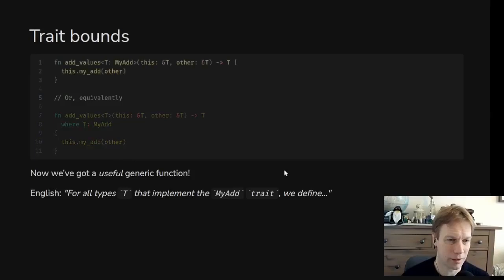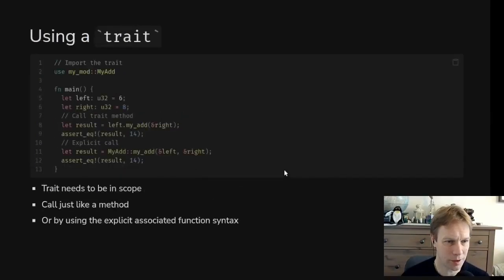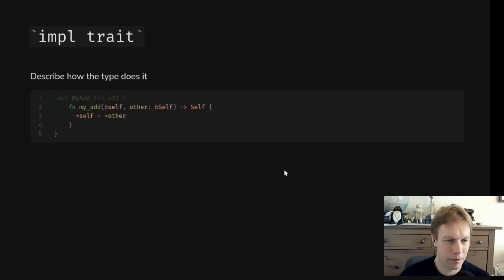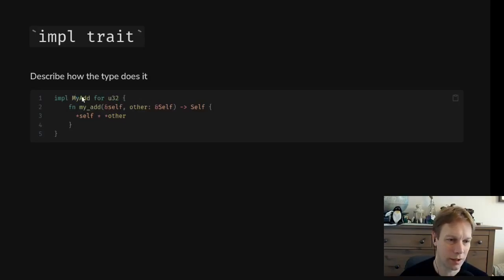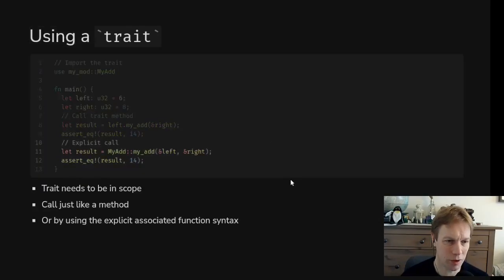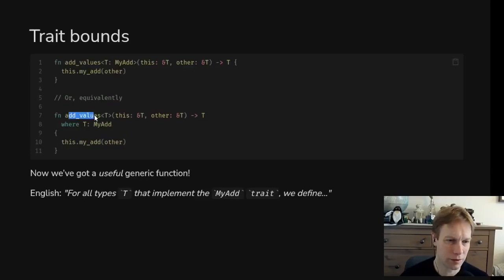Let's look at an implementation of myAd. Here's where we're implementing myAd for a particular type — when we say 'how do I add two u32s?' In this case it's trivial, we just use plus, but you could imagine something non-trivial in here. That gets defined inside the implementations of myAd, and every type you want to call add_values on must implement myAd — it must have code like what we just looked at for i32.